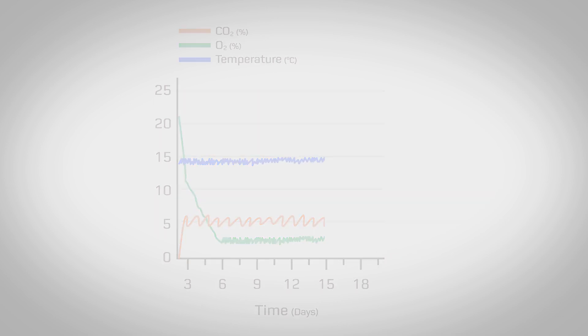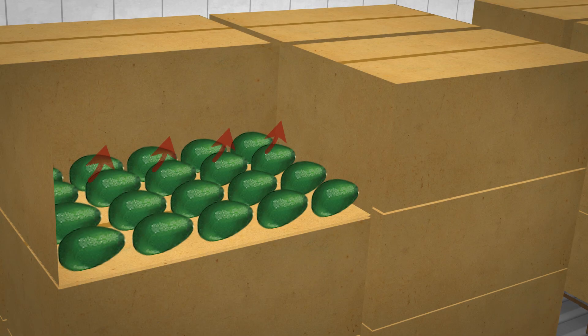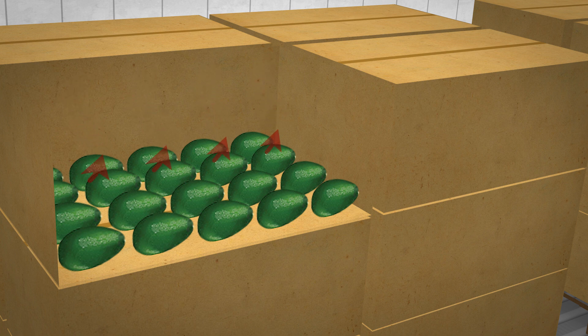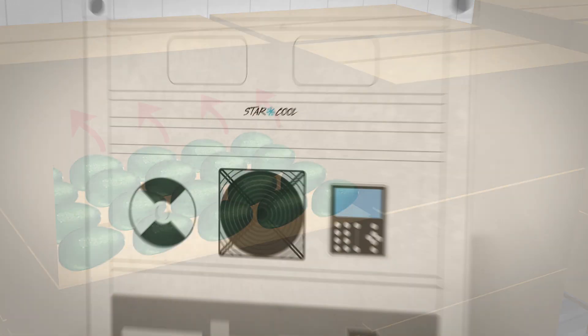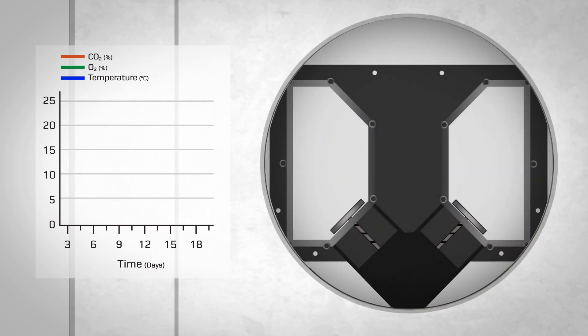The optimal atmosphere created ensures that the respiration process, or ripening, is kept as slow as possible. To maintain this optimal atmosphere, a fresh air intake automatically draws in the correct amount of fresh air needed to ensure the required oxygen level.